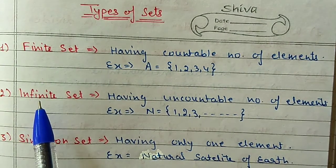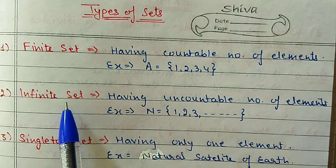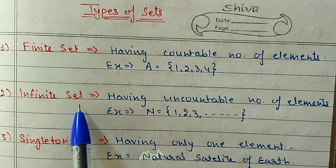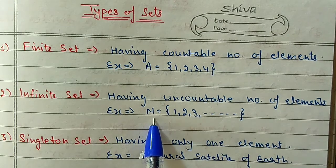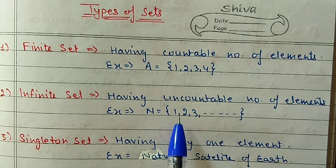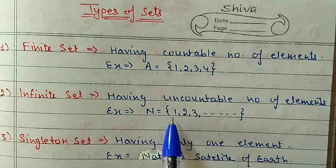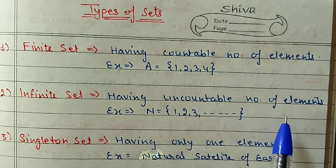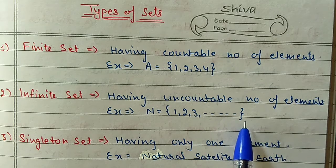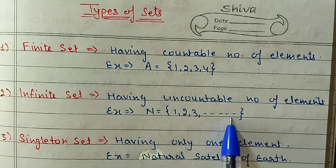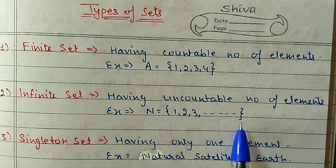The second type is an infinite set. By the name alone you can guess - infinite means which we cannot count. So here I have taken the set of natural numbers as an example. The set of natural numbers starts from 1, 2, 3 and goes up to infinity. Up to infinity means we cannot count how many numbers are there in this set, so we call it an infinite set.